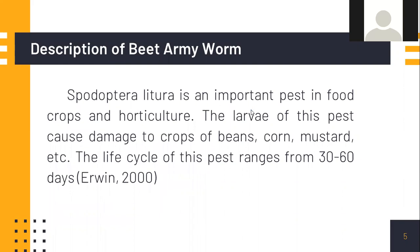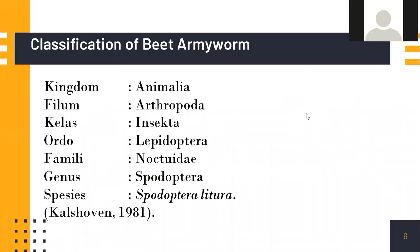The beet armyworm, Spodoptera litura, is an important pest in food crops and horticulture. The larva of this pest causes damage to crops such as beans. The life cycle of this pest ranges from 30 to 60 days. Classification: Kingdom Animalia, Phylum Arthropoda, Class Insecta, Order Lepidoptera, Family Noctuidae, Genus Spodoptera, Species Spodoptera litura.